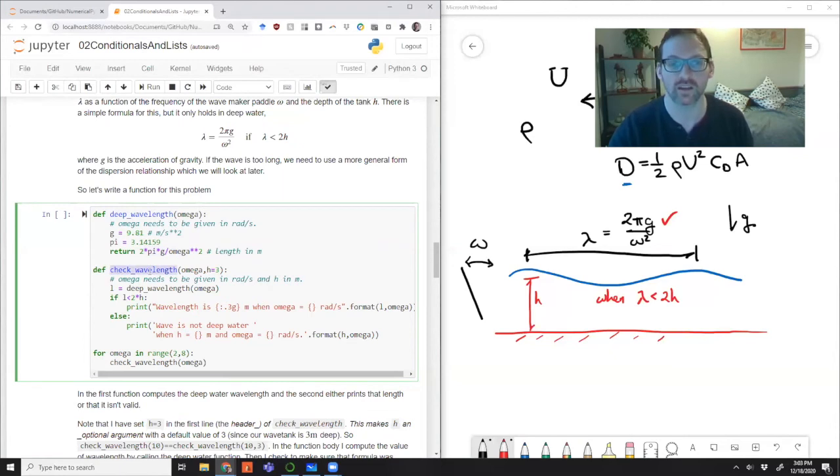But we know that that's not always valid. So we write a second function called check wavelength. And in this case, omega is one of the inputs, and the other input is h. So we can see that kind of only looking at the deep water relationship, we don't need to know h. But as soon as we think about the whole relationship, we need to know both omega and h to test if this is correct. So first, we just call the function. So this is an example of one function calling another. Only need to pass it omega. So far so good. This is kind of our candidate wavelength. And then we check it. And we check it exactly the way it's written above. If l less than two times h. If that's true, then we'll print out the wavelength and the frequency that we gave it as an input.